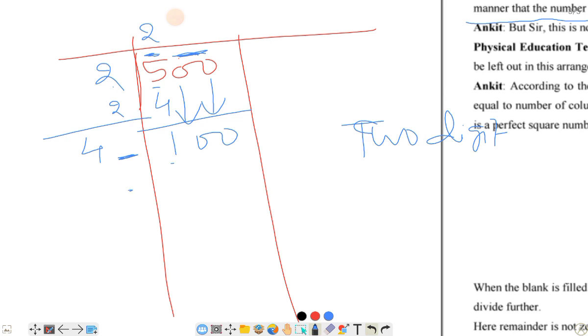Here we have to divide to find the square root. 2 into 4 is 4. 2 into 8. We will add 2 here, so this will be 84. 4 times 4 is 16.